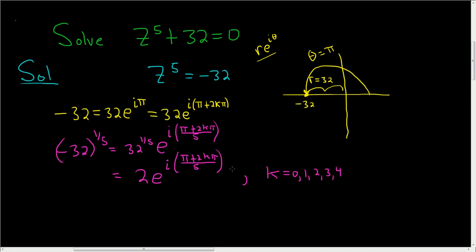We plug in 0, 1, 2, 3, and 4 to get all the roots. Let's do it carefully. When k equals 0, we get z1 equals 2 e to the i pi over 5. That's one answer.